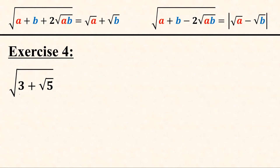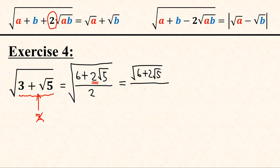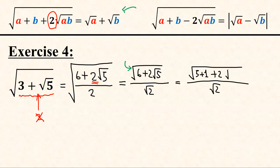Now let's look at the last exercise: square root of (3 plus square root of 5). Here we cannot extract a factor of 2 in front of the inner radical. So in order to create the factor of 2, we write the entire radicand as a fraction with denominator 2. At the numerator we get 6 plus 2 times square root of 5. So we now have square root of (6 plus 2 times square root of 5) over square root of 2. Applying our method to the numerator: 6 equals 5 plus 1, and 5 equals 5 times 1.